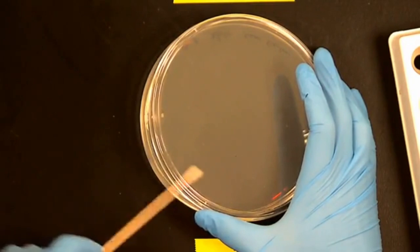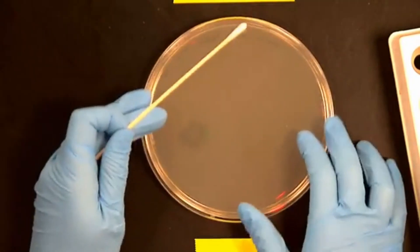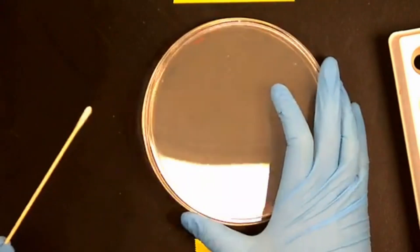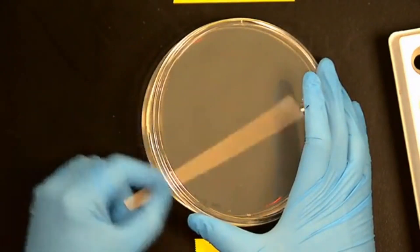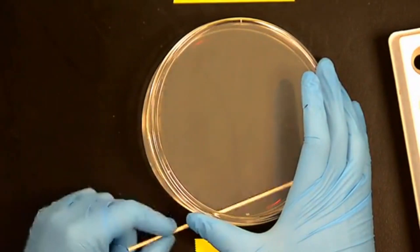Now this is the second of three times that you're going to cover the surface. So you'll rotate it again 60 to 90 degrees, and then the third and final swabbing will take place using that swab.